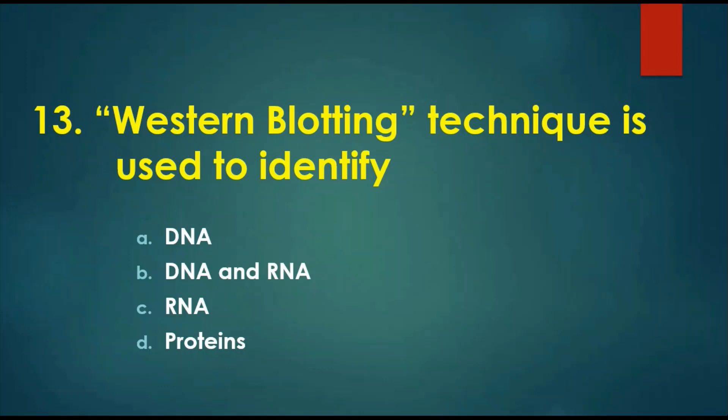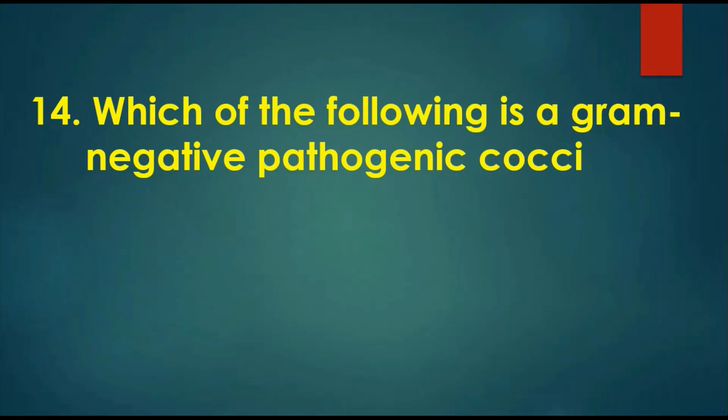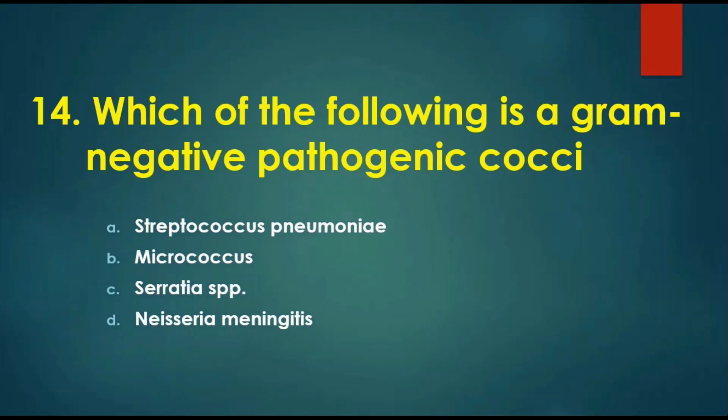Question 13: Western blotting technique is used to identify — options are: A) DNA, B) DNA and RNA, C) RNA, D) proteins. Western blotting is used to identify proteins. Southern blotting identifies DNA, and northern blotting identifies RNA. Remember: proteins by western blot, DNA by southern blot, RNA by northern blot.